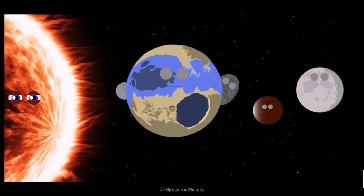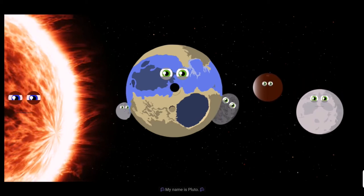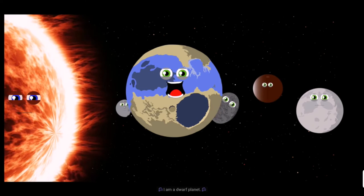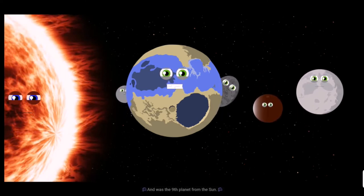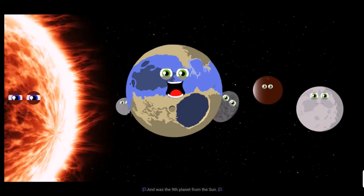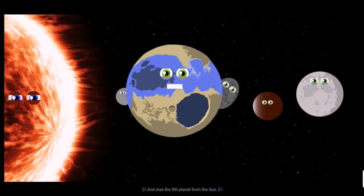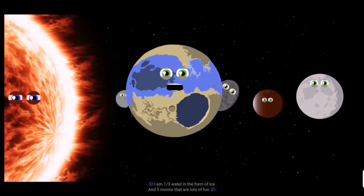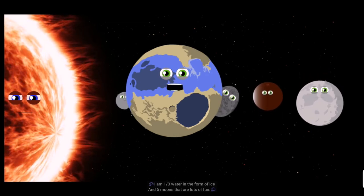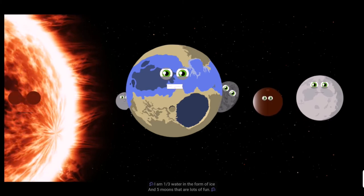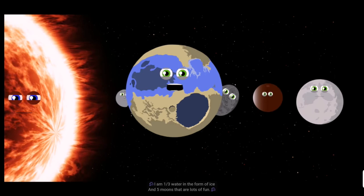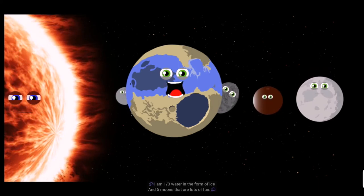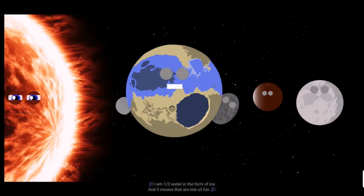My name is Pluto. I'm a dwarf planet and was the ninth planet from the sun. I have water in the form of ice and I have five moons. That's a lot of fun!